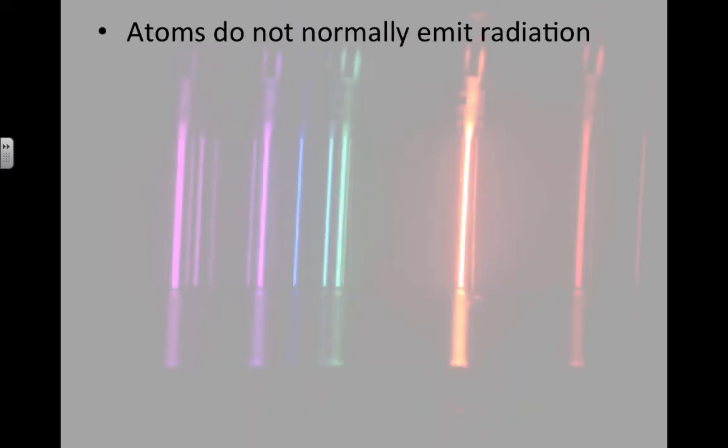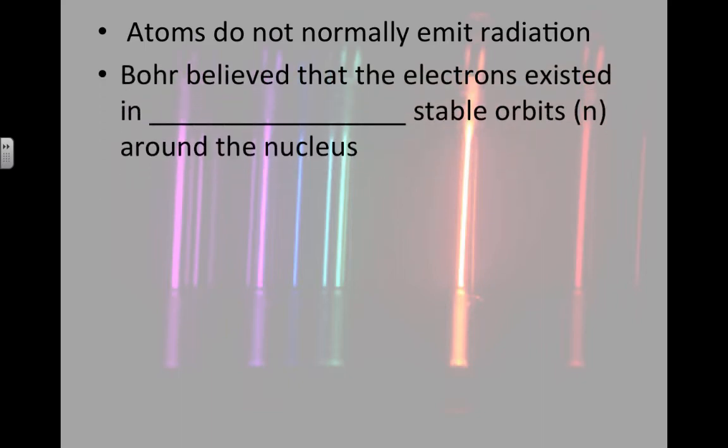Atoms would not normally be emitting this radiation. They only emit radiation when they've absorbed extra energy. Bohr did the experiment where he discovered the photoelectric effect. And Niels Bohr believed that the electrons existed only in certain discrete stable orbits around the nucleus. That means they didn't blend into one another. It was either level one or level two. There's no level 1.5.